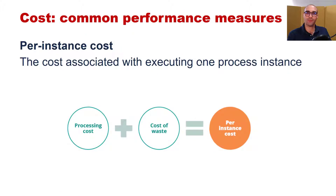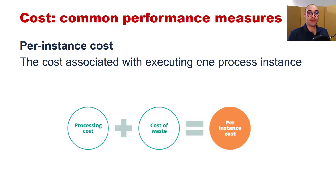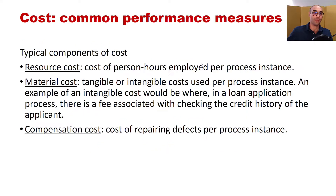The third performance measure is per-instance cost, where we estimate the cost for every instance or case execution inside the event log. It consists of the processing cost — the cost of executing the activities — plus the cost of waste, which is the cost paid for waiting between activities. Resources are paid for their working hours, but the processing cost is what is paid for time they are actually working, while the cost of waste is what is paid for idle waiting time.